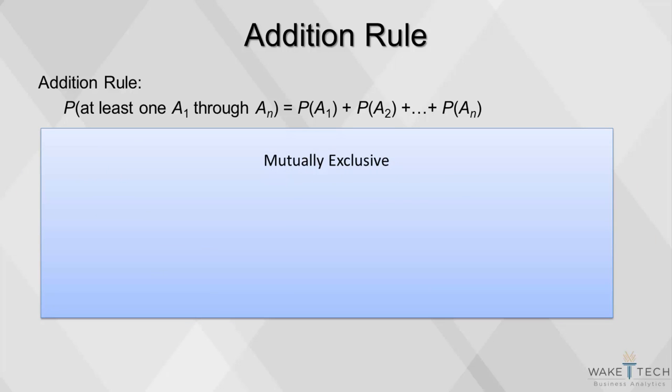We say that events are mutually exclusive if at most one of them can occur. For example, you can't roll a 3 and a 6 on one die at the same time. If you have two mutually exclusive events, then the probability of either one occurring is the sum of the two separate probabilities.